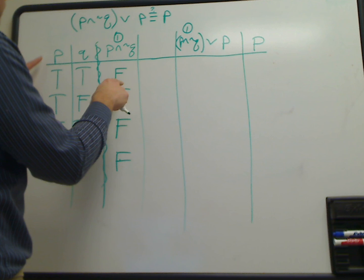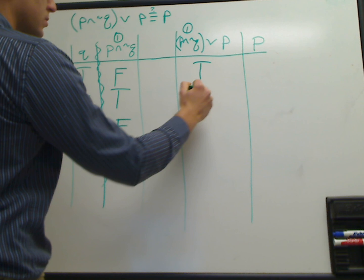So true OR false is true. True OR true is true. False OR false is false. And false OR false is false.